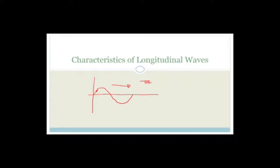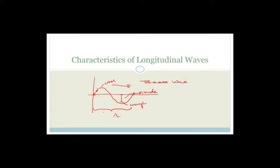That is a transverse wave. Remember: this was a crest and this was a trough. This bit here was the amplitude. The whole of this is one wavelength because there are two points that are in phase. The two adjacent points in phase give the distance of one wavelength, and the time taken for one wavelength to pass a point is the period.